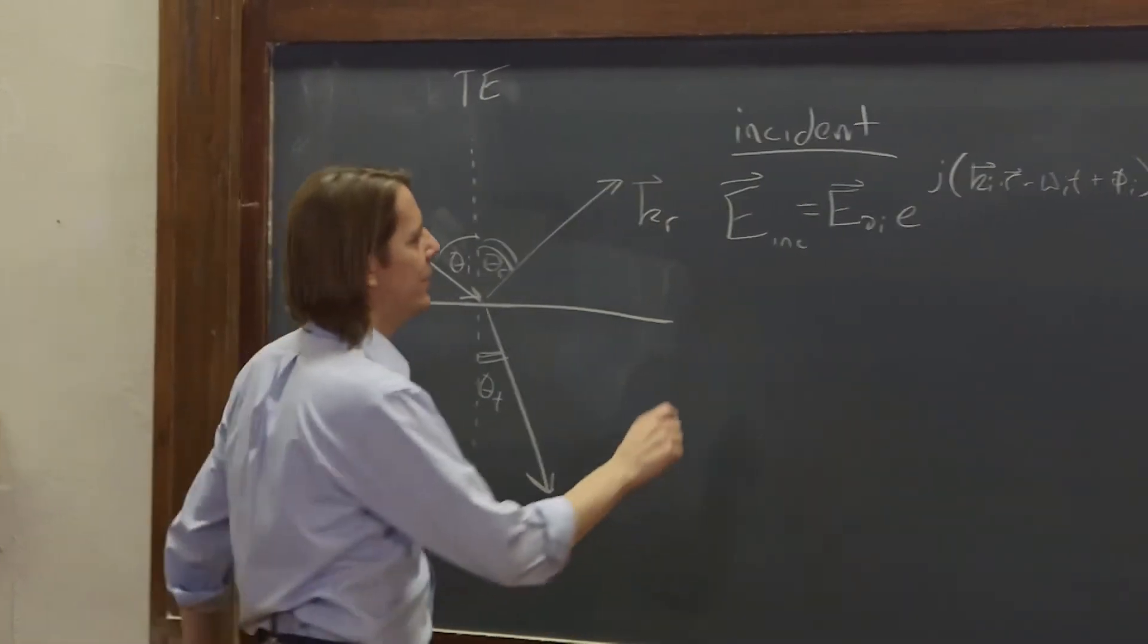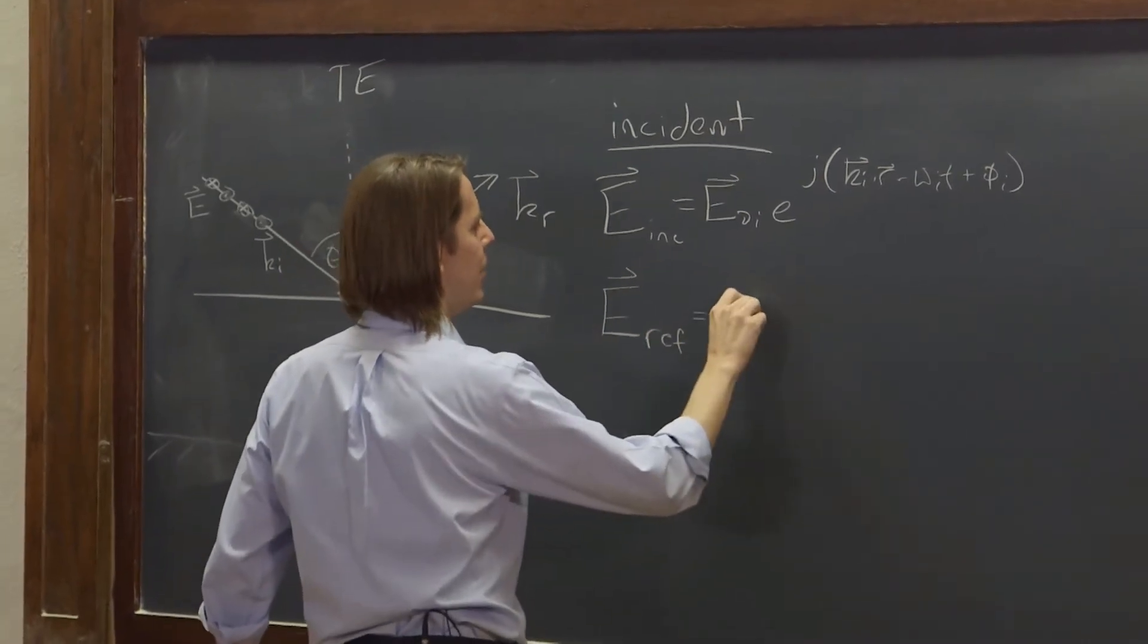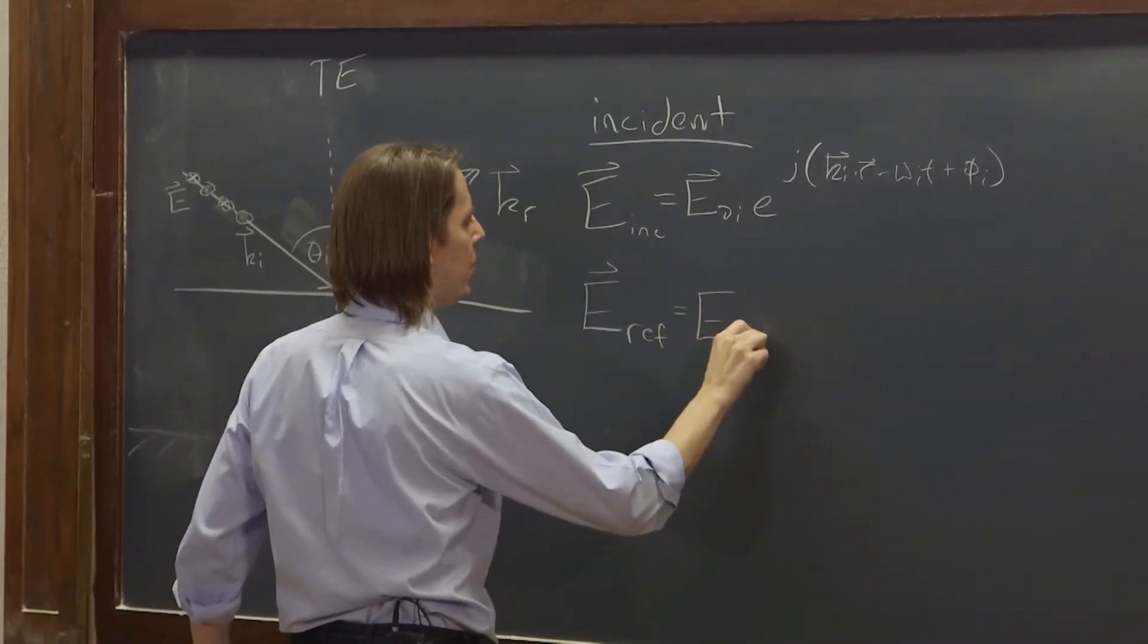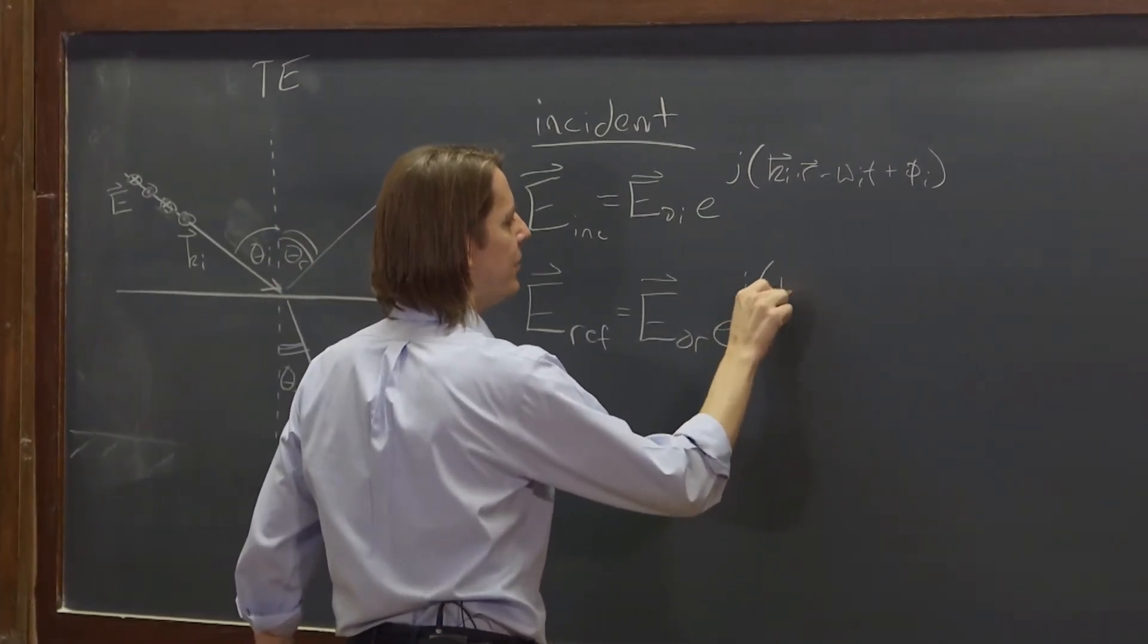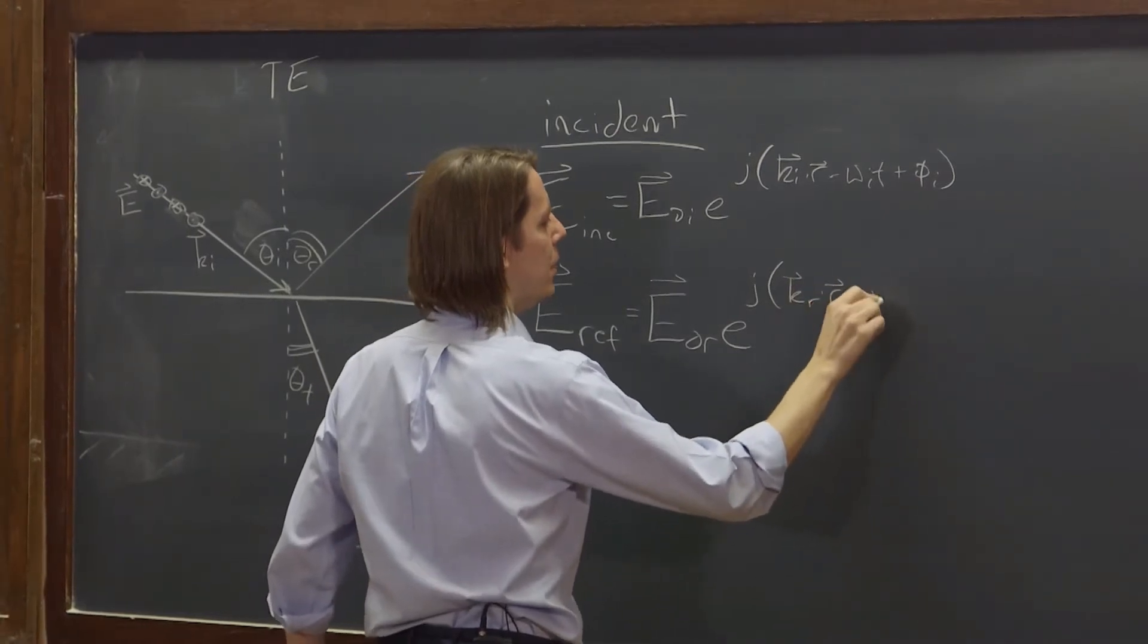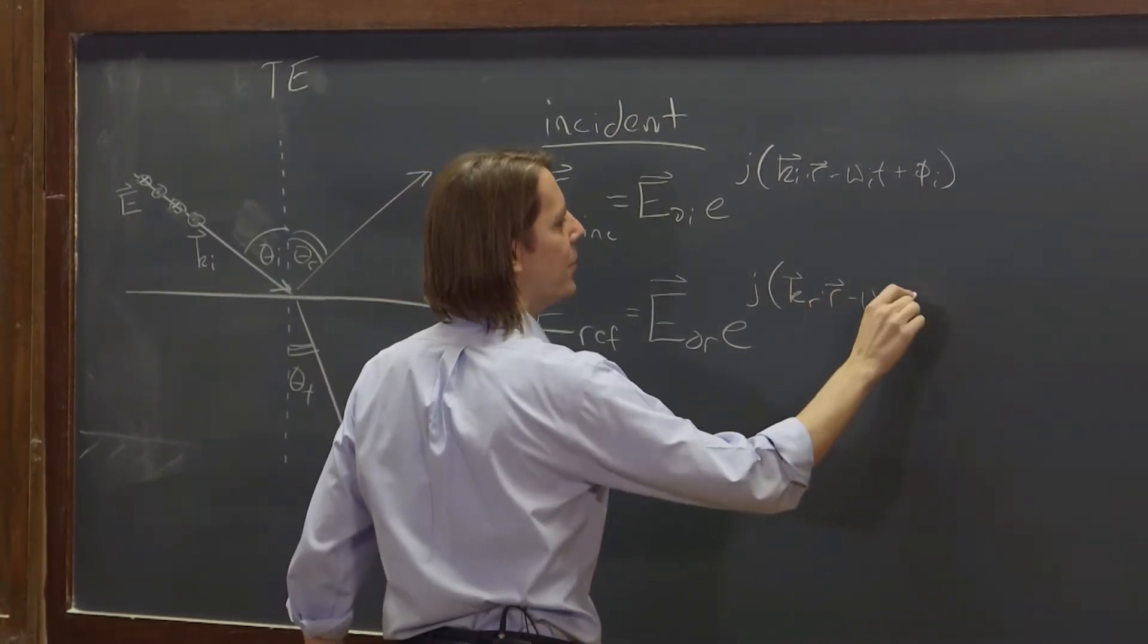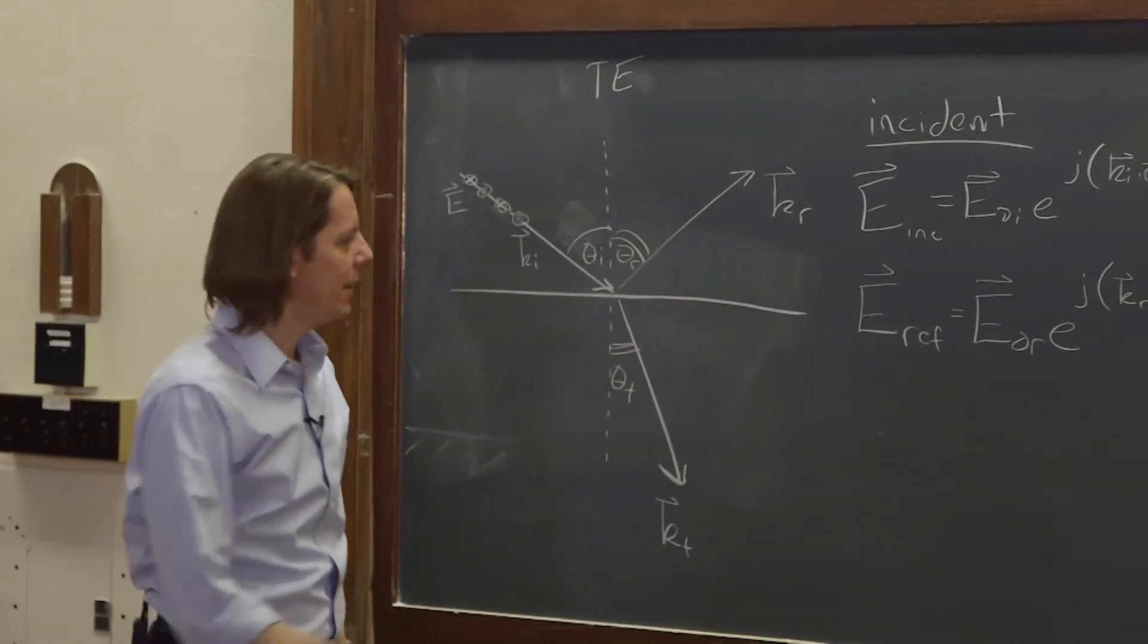That's the incident plane wave. Then there is a reflected plane wave, possibly. And it will have a vector amplitude, E-not-R, E to the J. And it will have a different wave vector, Kr dot R. It might have a different frequency, minus omega-R-T. It might have some different phase lag than the incident.